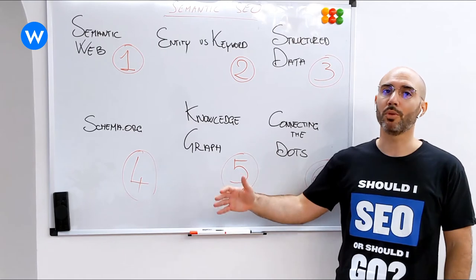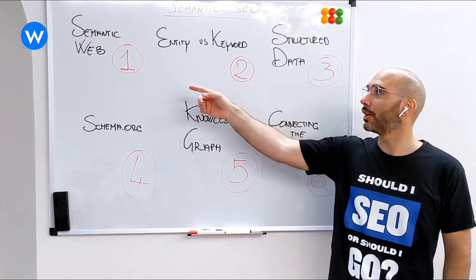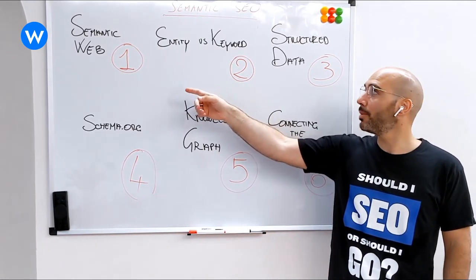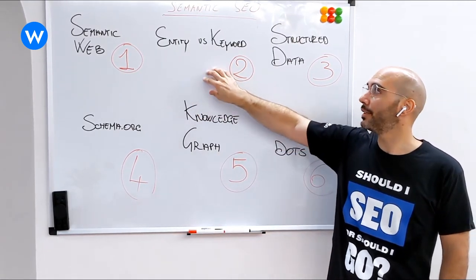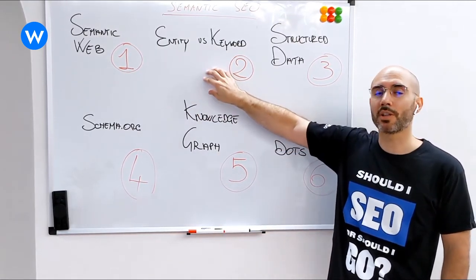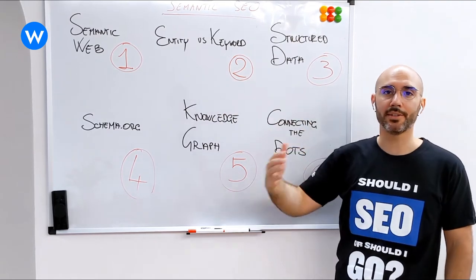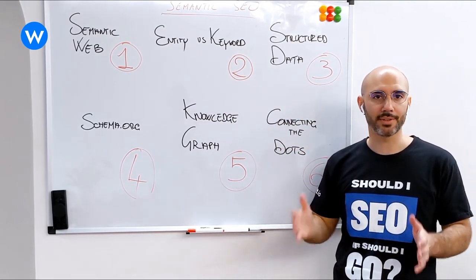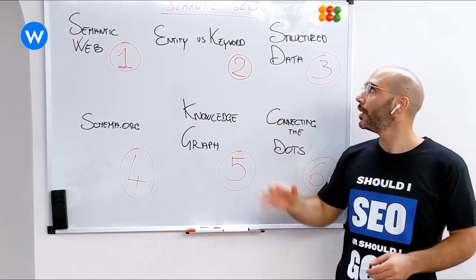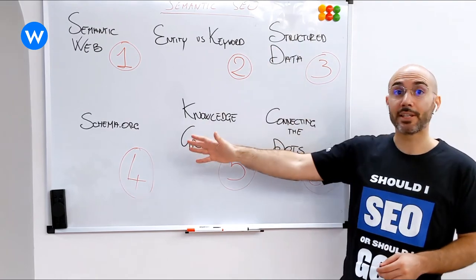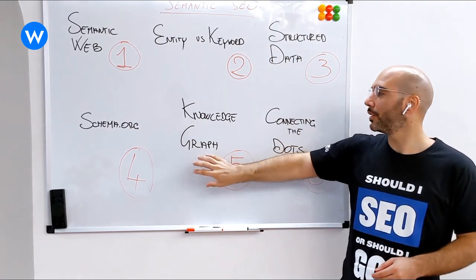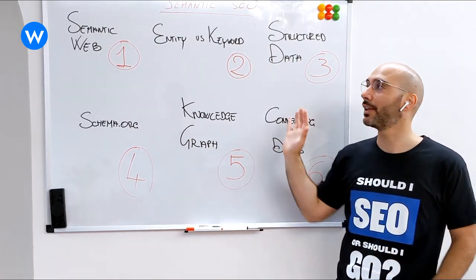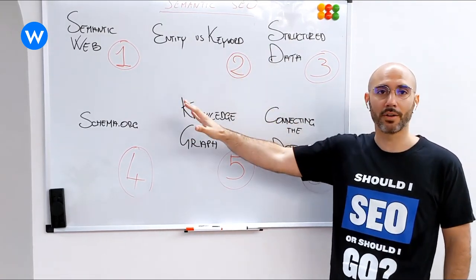Pretty much, we're going to work through the Semantic Web, the entity versus keyword distinction and why it is important today to understand this, structured data, schema.org, the Knowledge Graph, and then we're going to be connecting everything together.